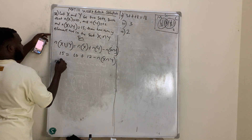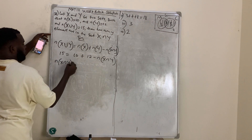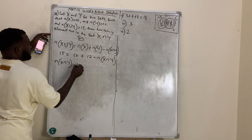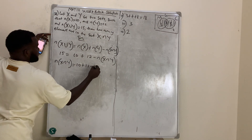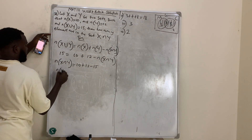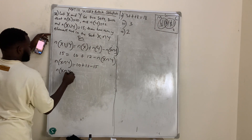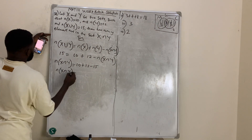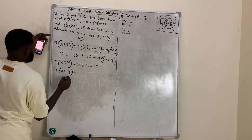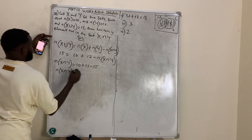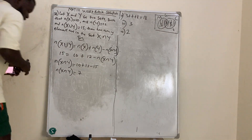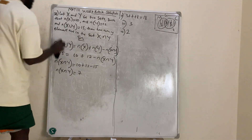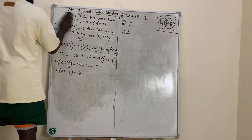Rearranging, the number of X intersection Y is equal to 10 plus 12 minus 15, which gives 7. So the number of X intersection Y is equal to 7. We now move to question number 39.